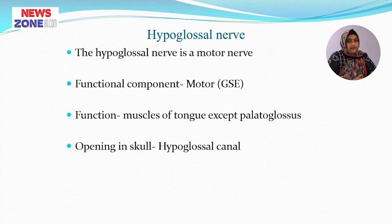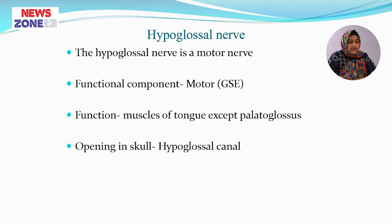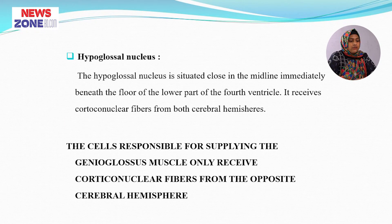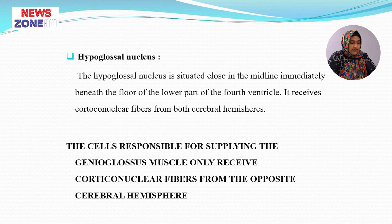The last cranial nerve is the hypoglossal nerve — the twelfth cranial nerve. The hypoglossal nerve is a motor nerve; its functional component is the general somatic efferent, supplying the muscles of the tongue except palatoglossus. Palatoglossus is supplied by the cranial part of the accessory nerve. It passes through the hypoglossal canal. The hypoglossal nucleus is situated close to the midline, immediately beneath the floor of the lower part of the fourth ventricle, and receives corticonuclear fibres from both cerebral hemispheres, except the cells supplying genioglossus, which receive fibres from the opposite hemisphere only.